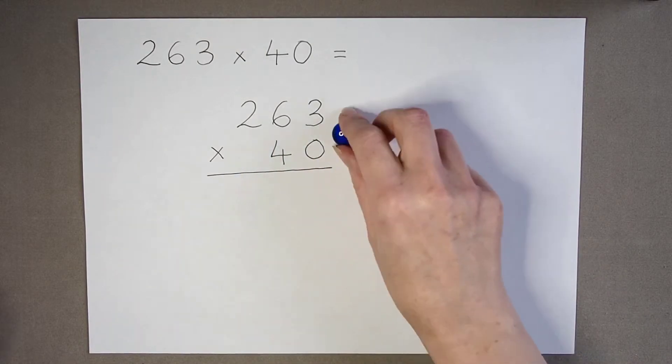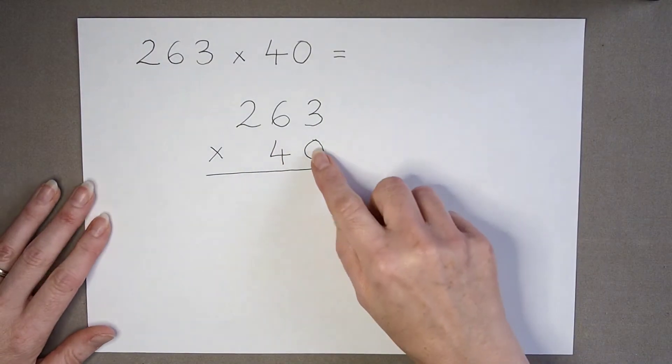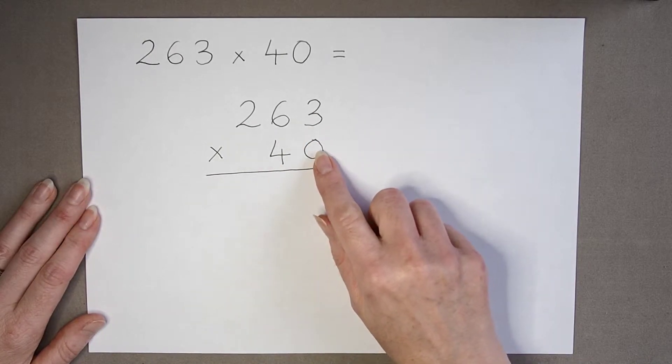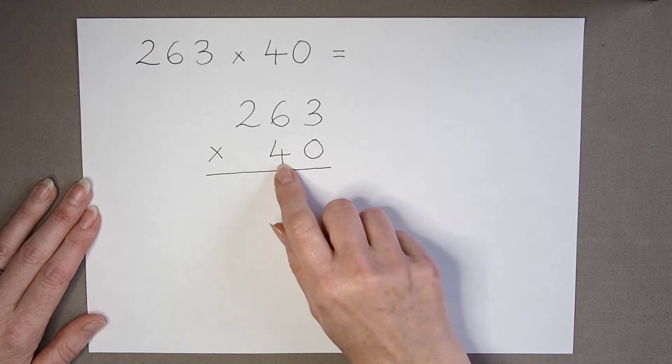So because there's a 0 here, there is no need to actually worry about multiplying this column. We can ignore this 0 digit and we can just move on to our tens.